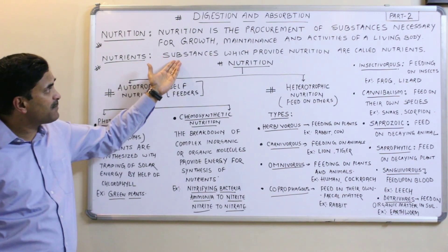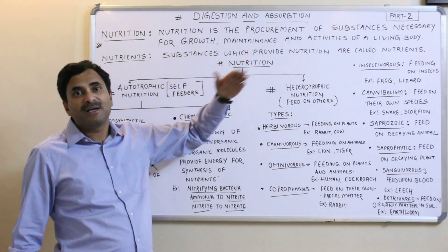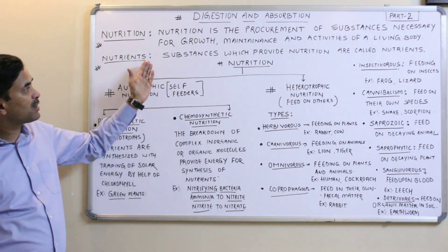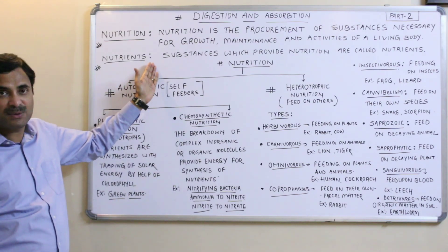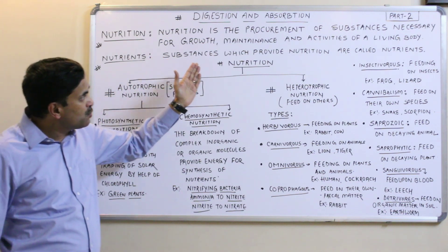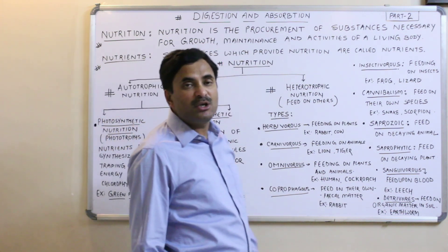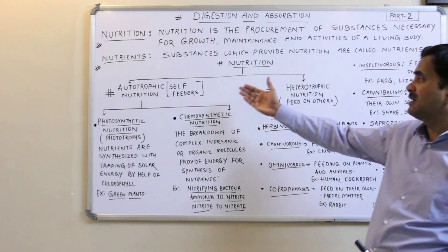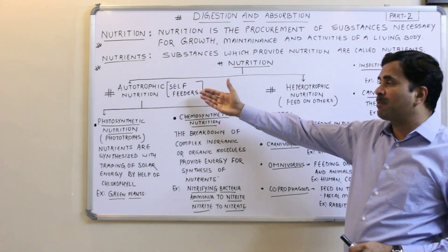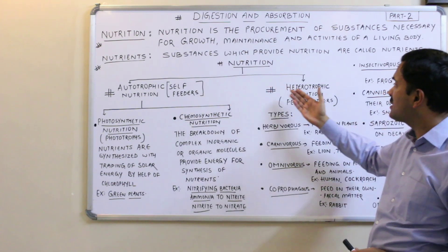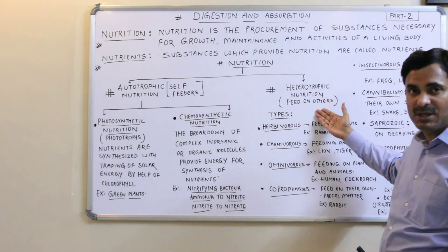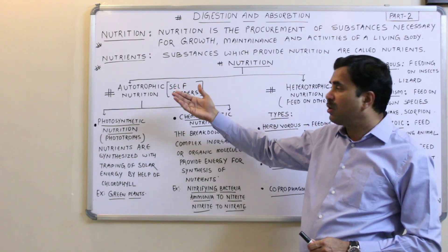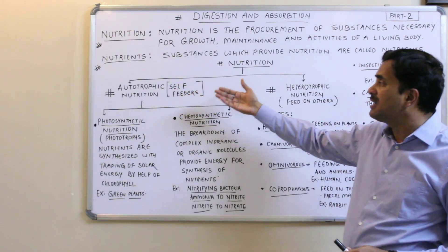These substances which give nutrition are called nutrients. So the substances which provide nutrition are called nutrients. Nutrition is basically classified into two categories: one is autotrophic nutrition and another is heterotrophic nutrition.